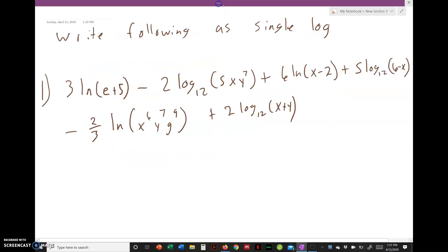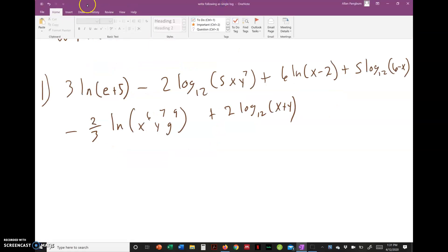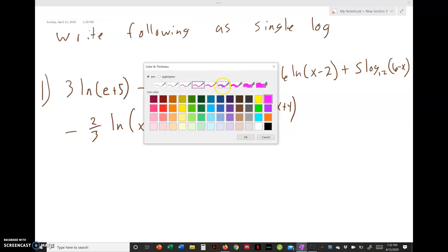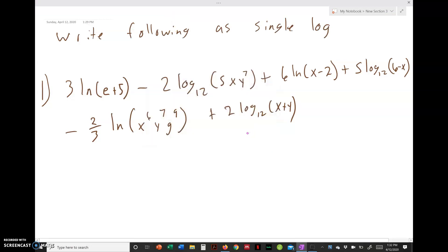So now let's practice. Looking at this example here, is this in your homework written this way? No. A lot of your homework will be just one single base, so you can think about this as two homework problems together as one. You have 3 ln of (e+5) minus 2 log base 12 of (5xy^7), plus 6 ln of (x-2), plus 5 log base 12 of (6-x), minus 2/3 ln of (x^6 y^7 g^9), plus 2 log base 12 of (x+y).